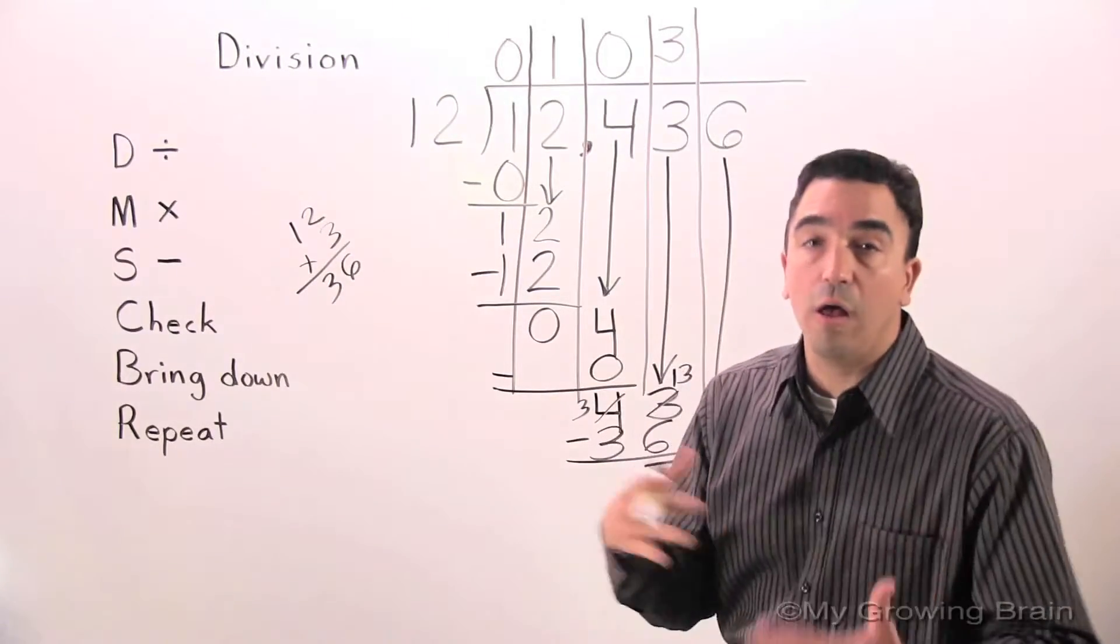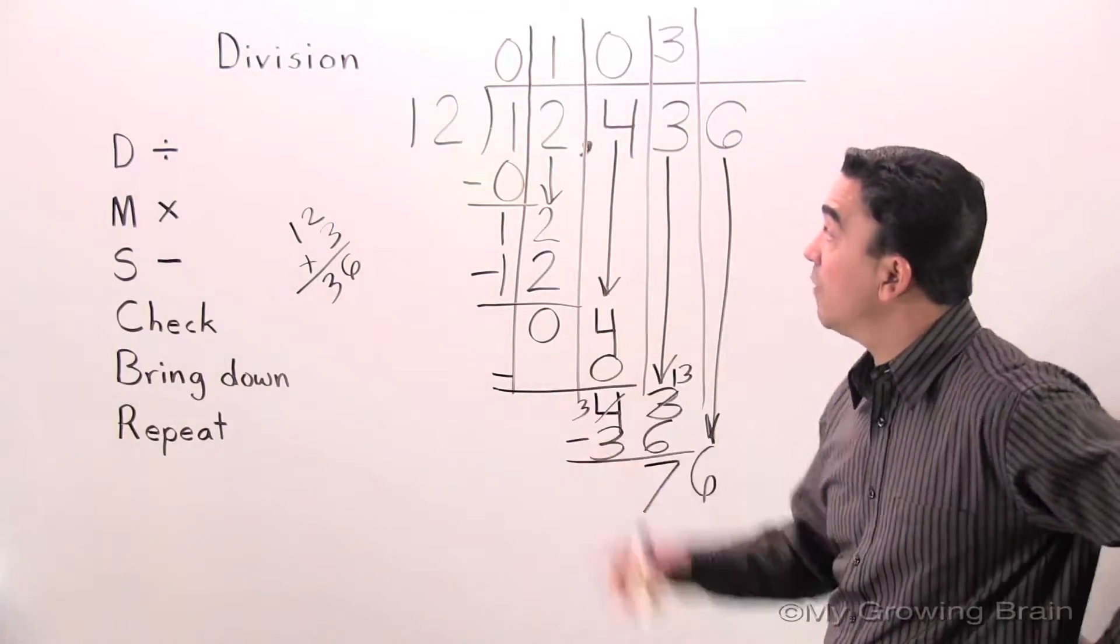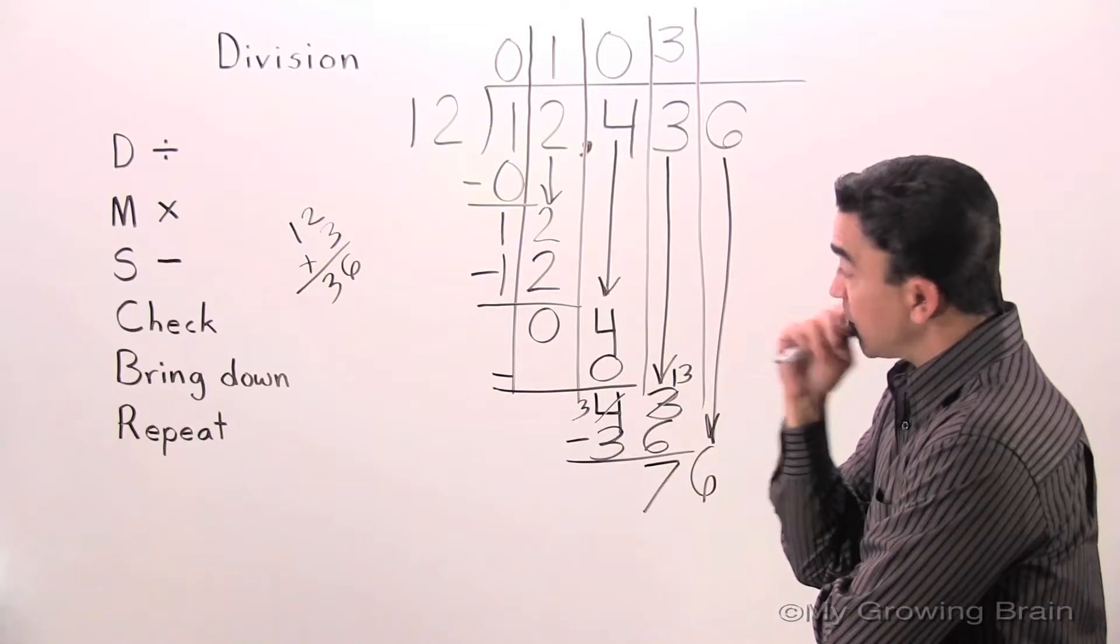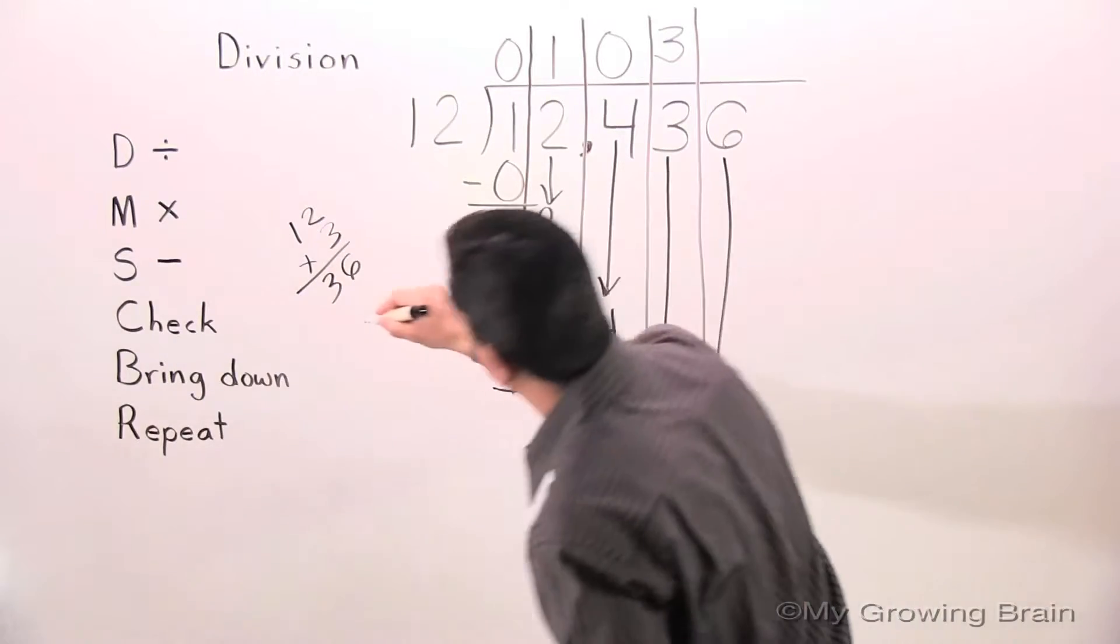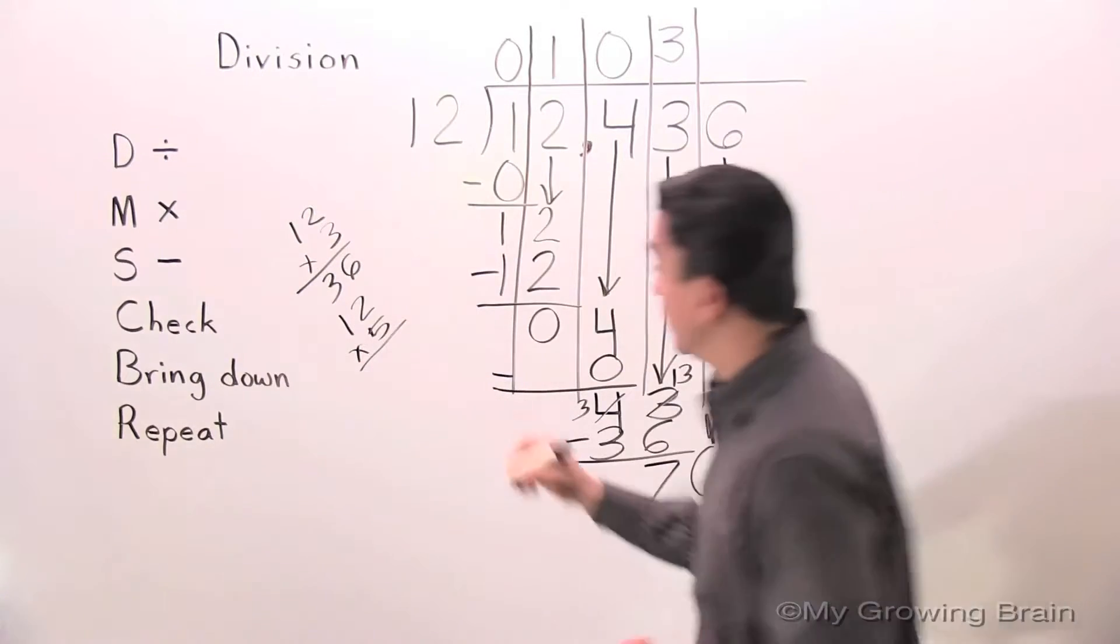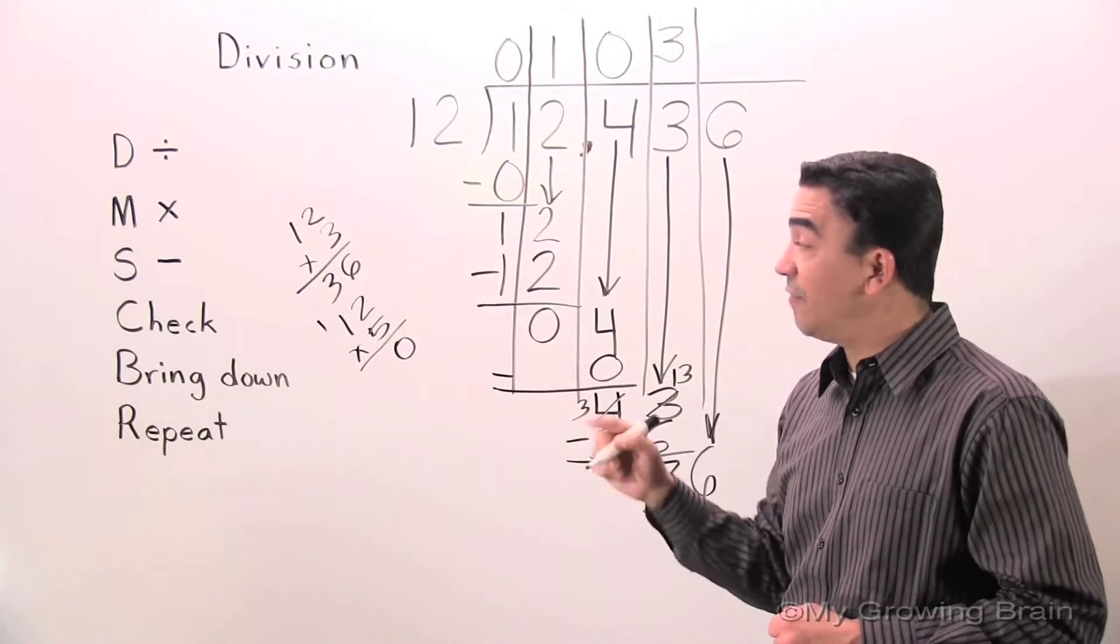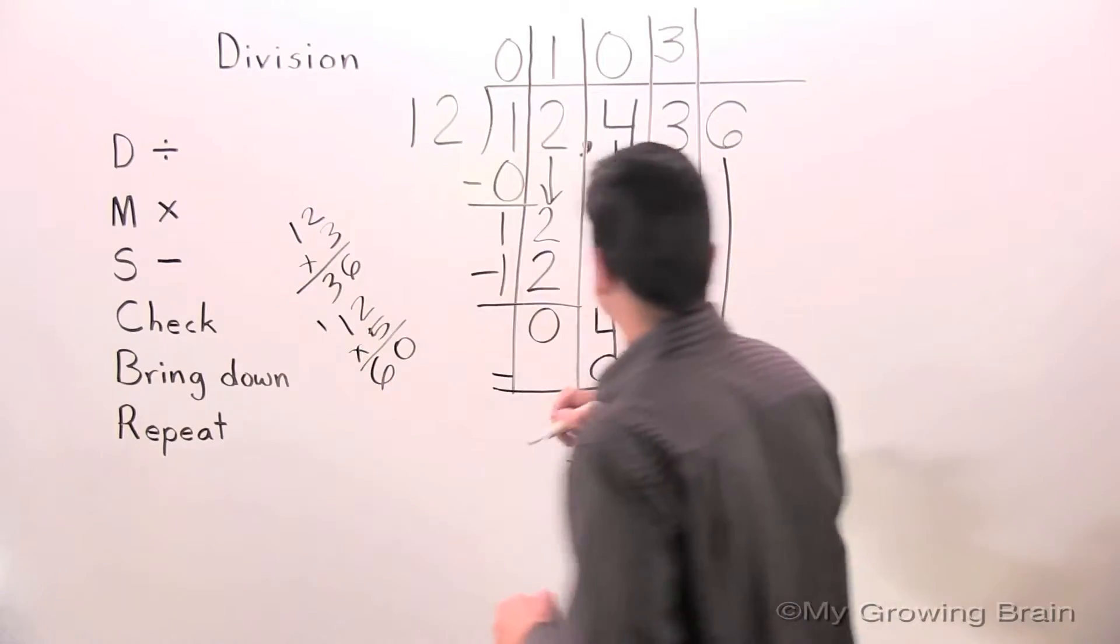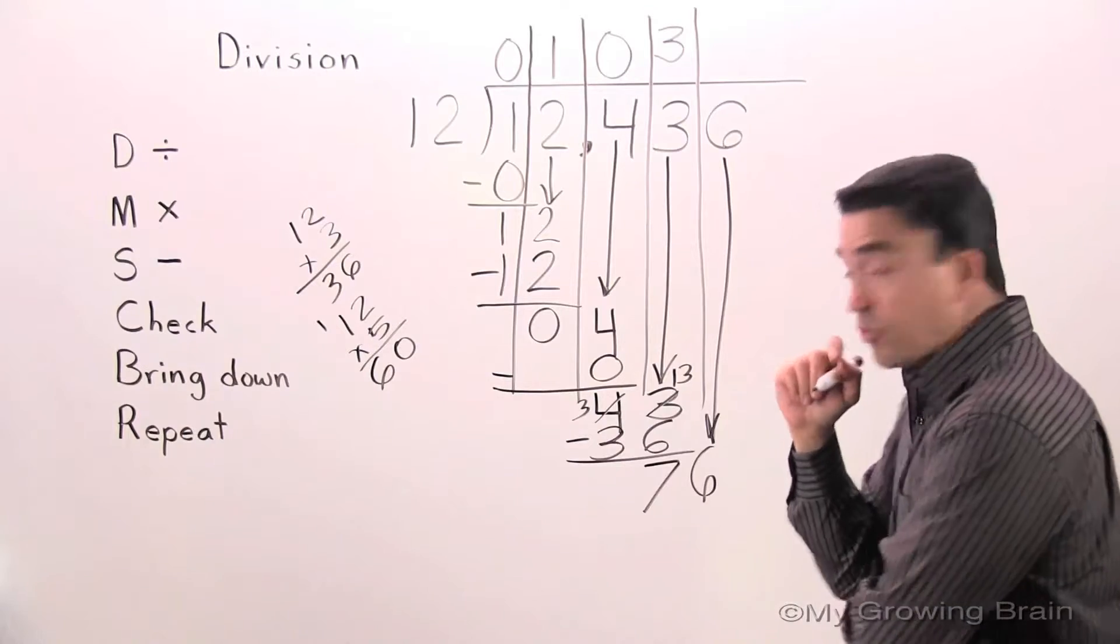Repeat the process. All the way back up to divide. 76 divided by 12, or 12 into 76. Hmm. Well, I tried 12 times 3. I'm going to try 12 times 5. 5 times 2 is 10. Regroup the 1. 5 times 1 is 5, plus 1 is 6. Hmm. I think I can get closer. I'm going to try 12 times 6.